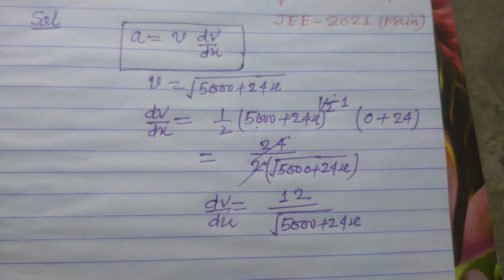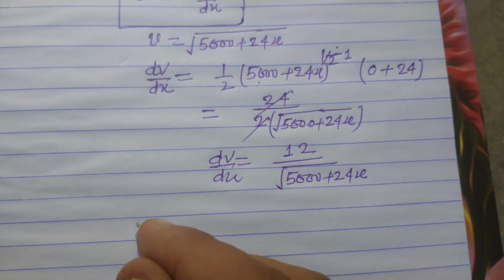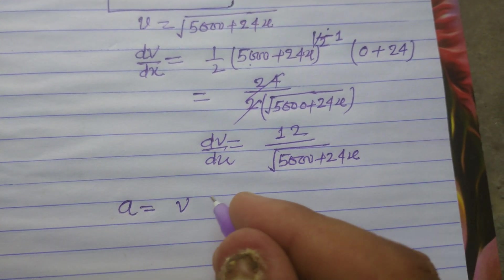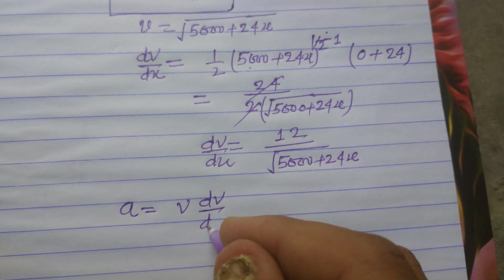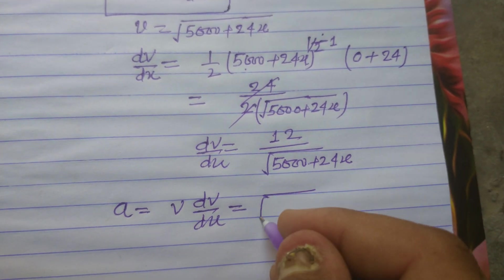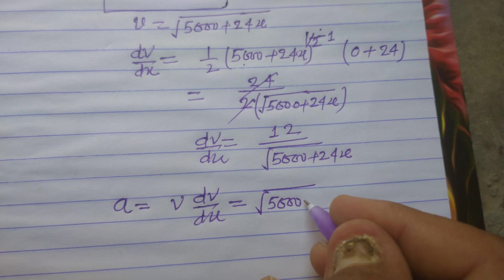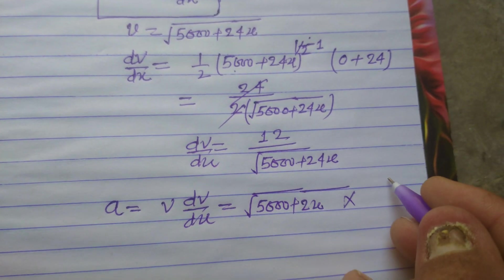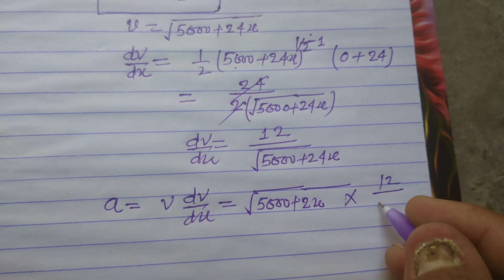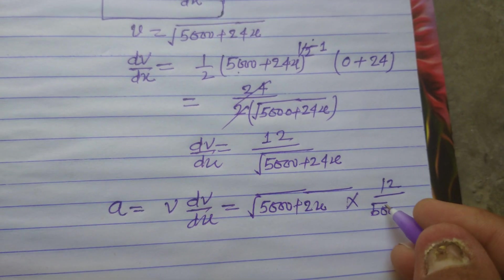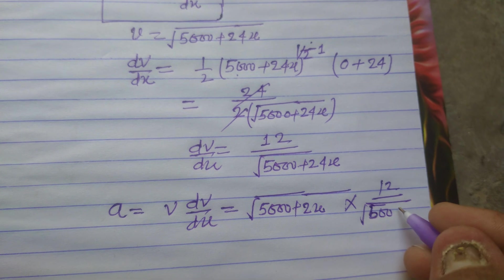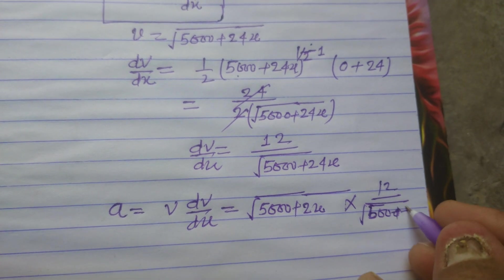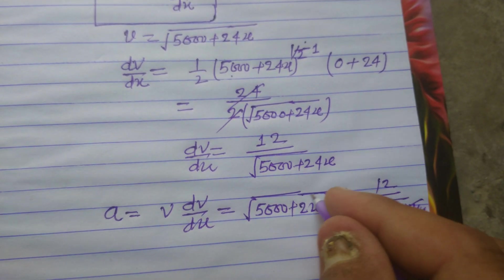This is dV/dx. Now we want to find acceleration, so a = v(dV/dx). Since v is √(5000 + 24x), these cancel out.